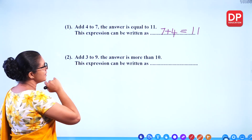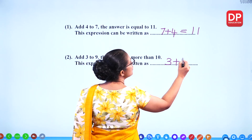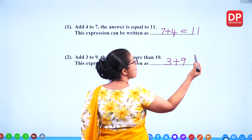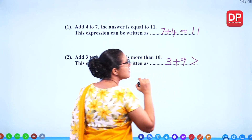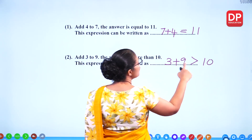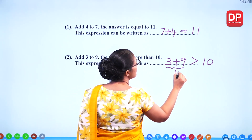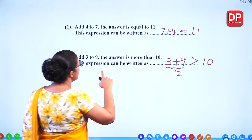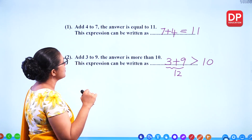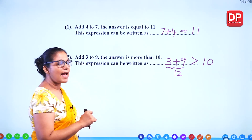Add 3 to 9. The answer is more than 10. We can use this mathematical symbol — greater than 10. It's true: 9 plus 3 equals 12, and 12 is more than 10. This expression can be written as 3 plus 9 greater than 10.